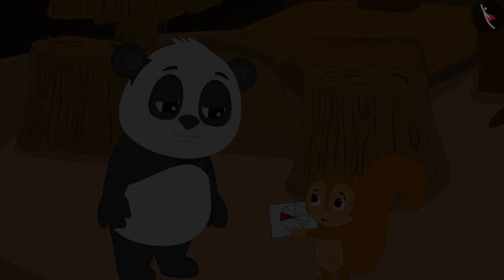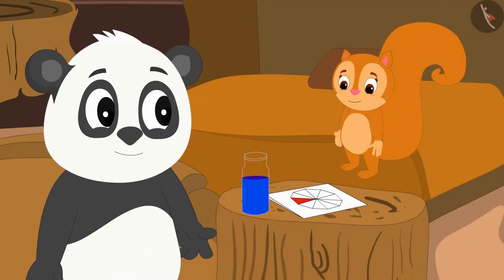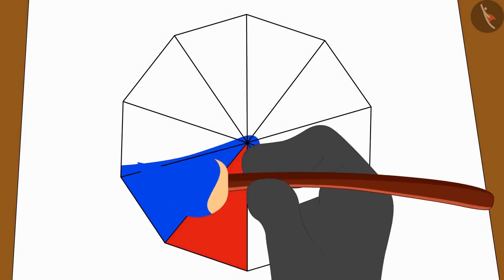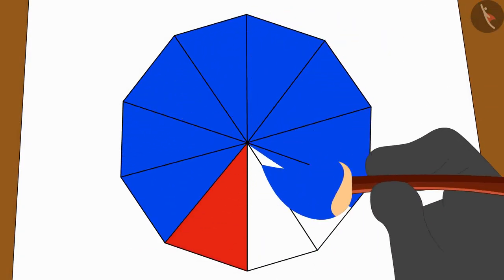Chanda told Golu. Golu immediately brought the blue color bottle and began to color the rest of the flower.